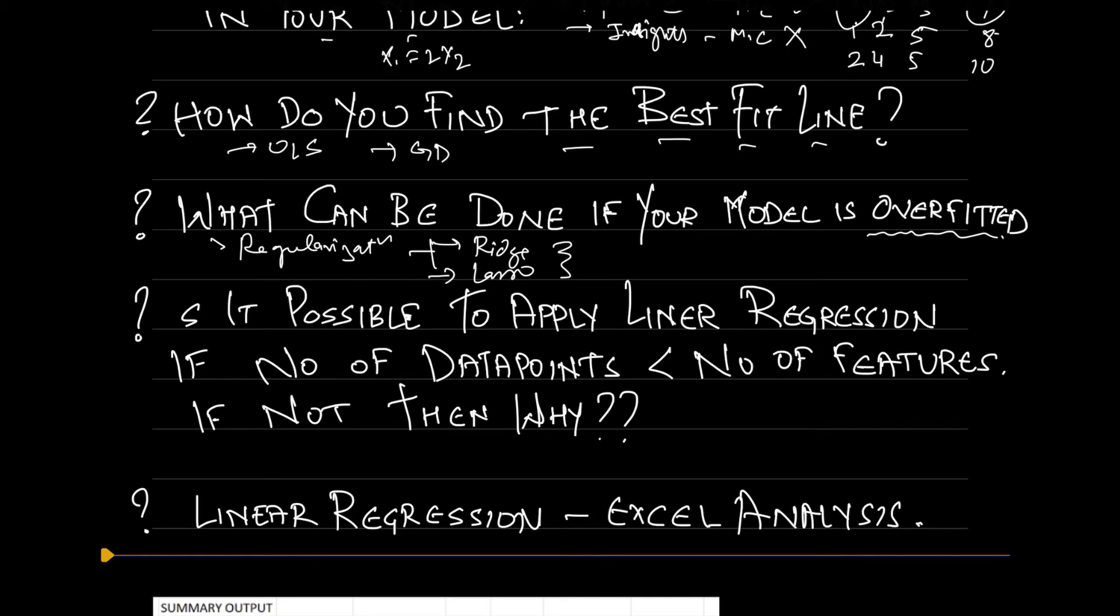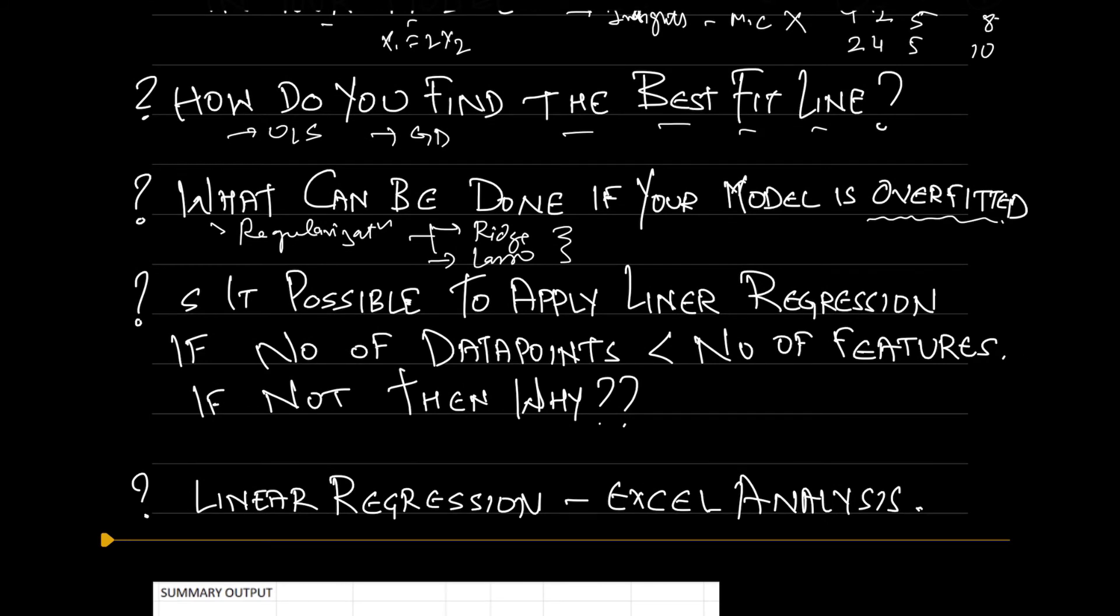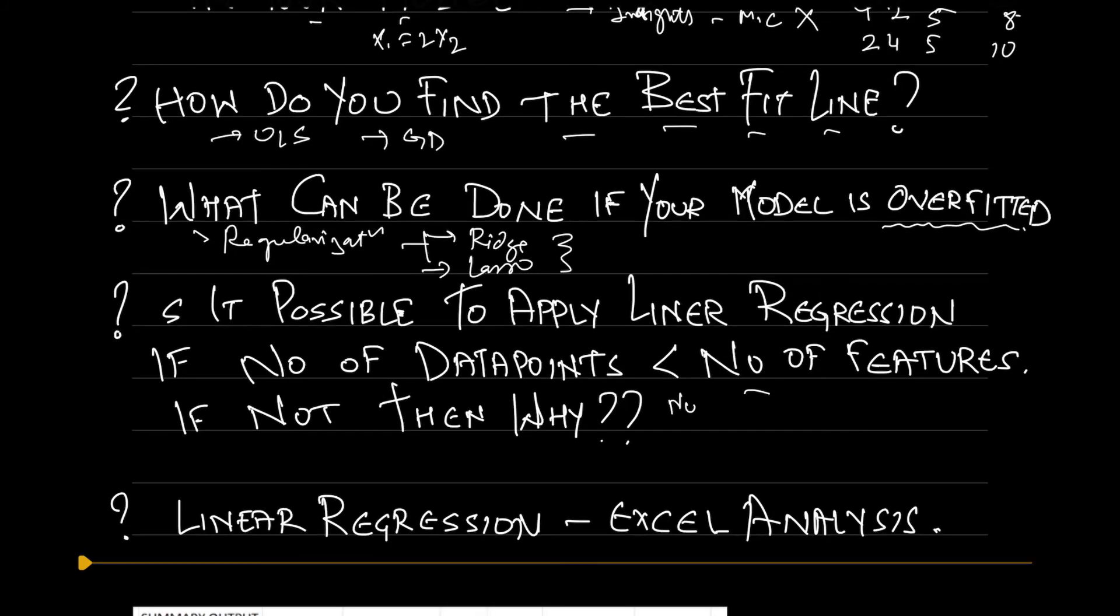The next question is: is it possible to apply linear regression if the number of data points, the number of records, are less than the number of features? If not, then why? The answer is no, it is not possible because statistically it is not possible to model this. We have studied in our school days that if you have three variables, then you should have at least three equations to find out the value of those three unknown variables. Similarly here, if you have three variables and you want to find out the coefficients of all three variables, then you should have at least three data points from which you can make three equations in order to find out these three coefficients.